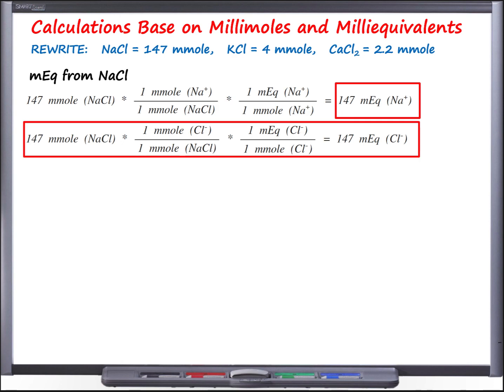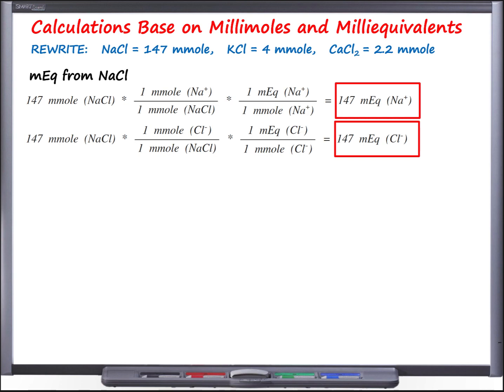For chloride from sodium chloride: starting again with 147 mmol of NaCl, there is one chloride per sodium chloride molecule. Chloride has a valence of −1, so there is also 1 milliequivalent per millimole. Therefore, 147 mmol × 1 mEq/mmol = 147 milliequivalents of chloride from sodium chloride.